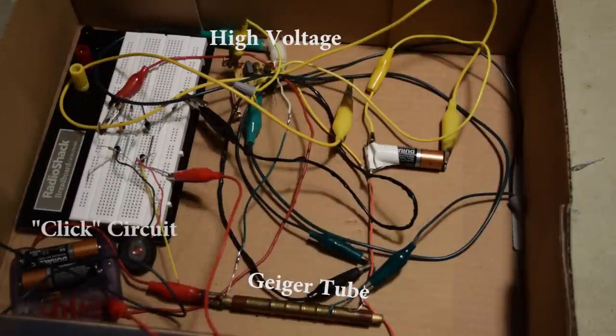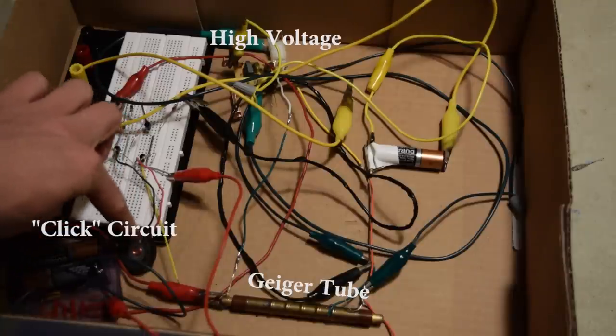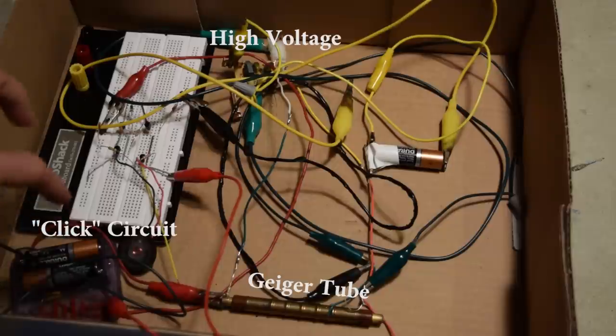The other major component is the circuit that actually makes the clicking noise. This is just made from some transistors and resistors and some capacitors that were purchased at Radio Shack and an 8 ohm speaker. It runs off of 3 volts DC.